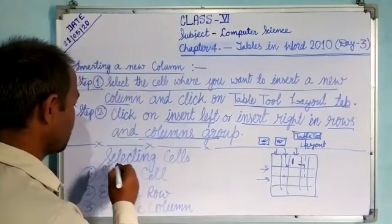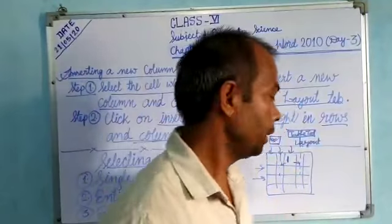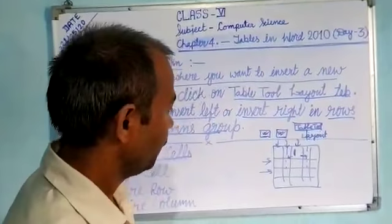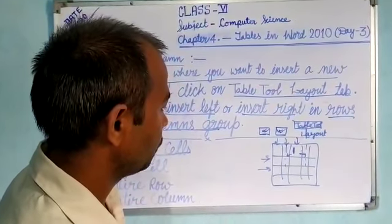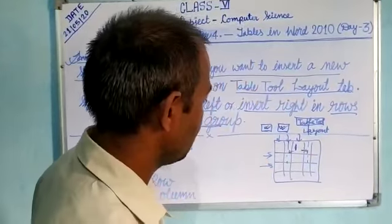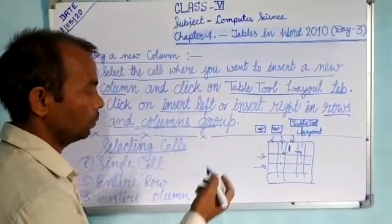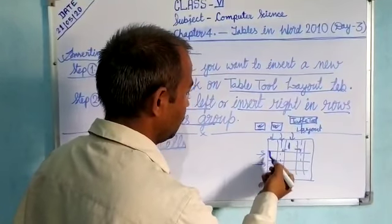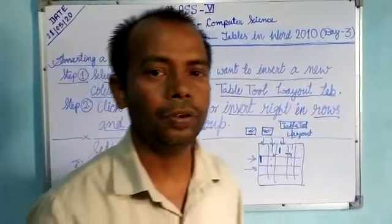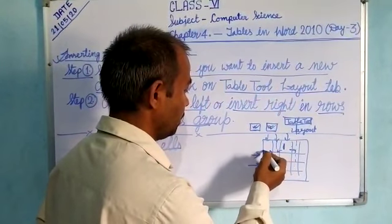The next topic is selecting cells. When we have a table, we need to do formatting, change data, values, or information. First we select the cells, and then we can do the formatting. To select a single cell, we do a triple click of the mouse left button, and the single cell will be selected.